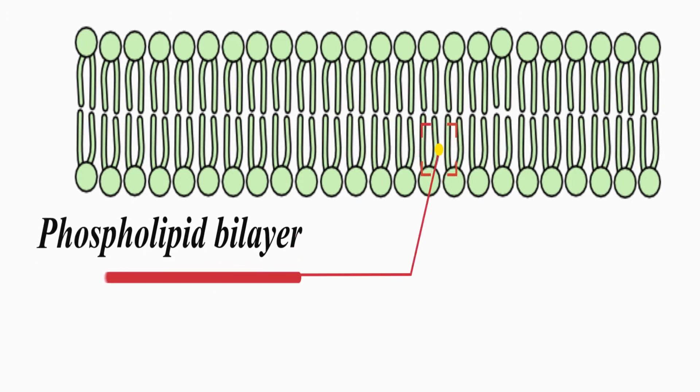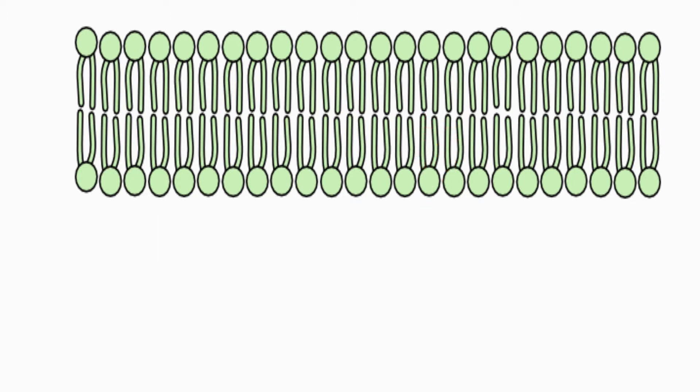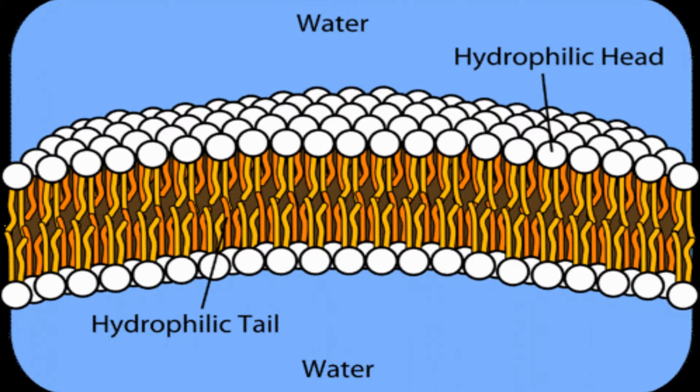Because the head groups are hydrophilic, they move towards water outside and inside the cell, while the tail groups are hydrophobic, so they move away from water towards the center of the bilayer. This phenomenon causes the formation of the phospholipid bilayer.